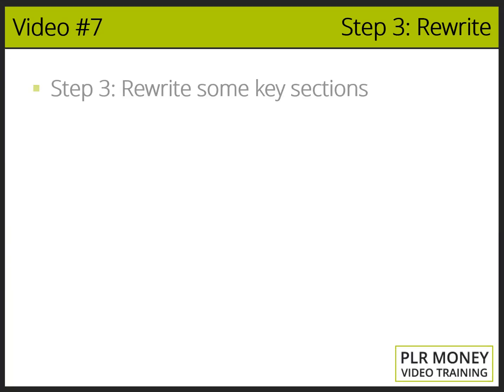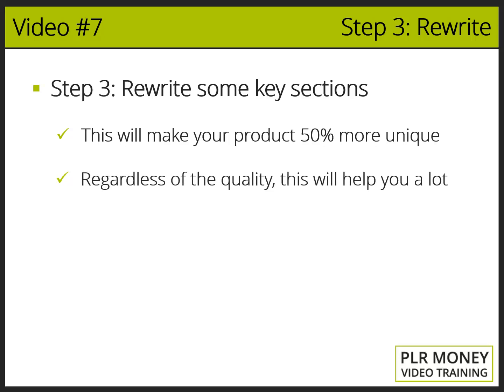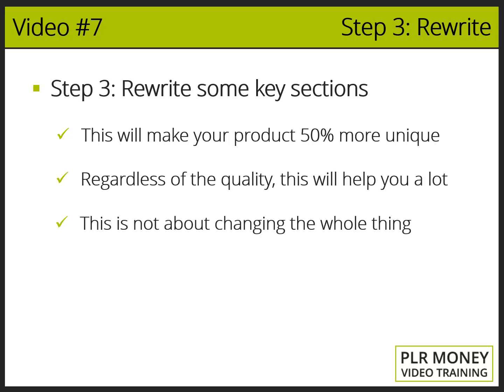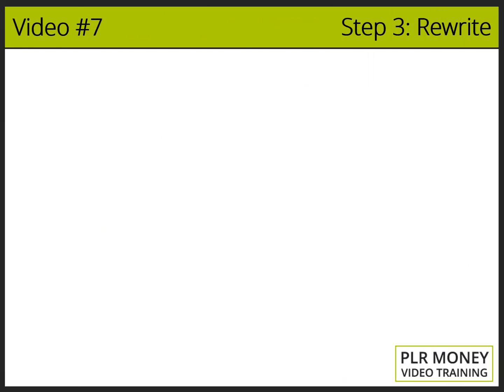Video number seven, step number three: rewrite some key sections inside the material. This step will make your product 50% more unique than every one of your competitors, regardless of the quality of the PLR product you may have. This step will help you create a unique and high quality product. The higher the quality of the PLR product you get, the less money and effort you'll have to invest. I'm not talking about changing the whole thing — what I'm talking about is changing some very important parts. Let me explain six important sections you should focus on in the rewriting process.